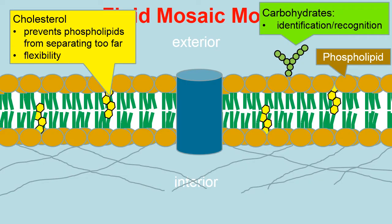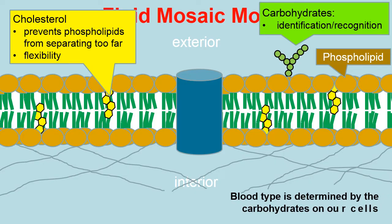The green chain of circles represents carbohydrates. Sometimes these carbohydrates are attached to proteins and sometimes to lipids, but they stick out of the cell and are used for identification or recognition purposes. This is one way our immune system knows to target foreign cells but ignore cells that belong to us. For instance, our blood type is determined by the carbohydrates on our cells.